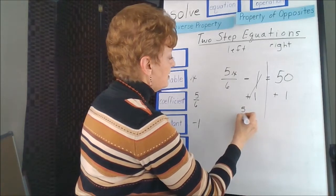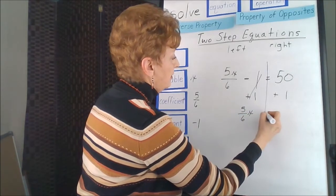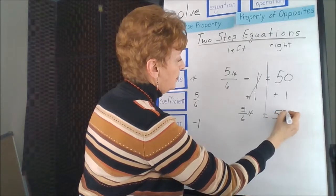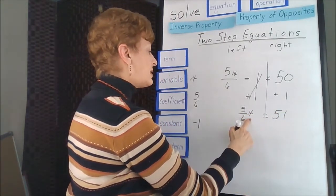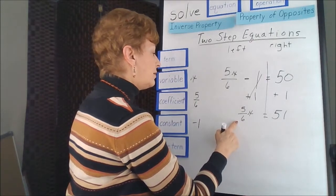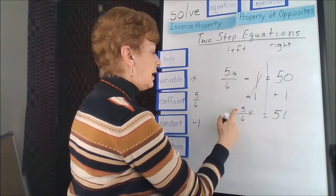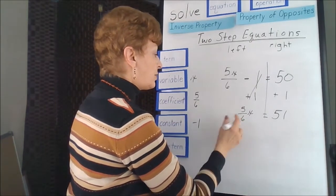5 sixths x is equal to 51. Next, we're going to have to split off our coefficient from the variable. It's a fraction, so we're going to use the reciprocal.